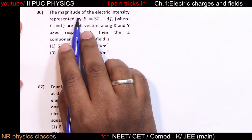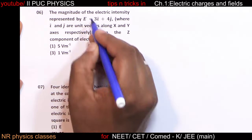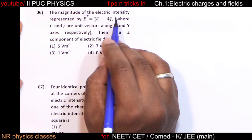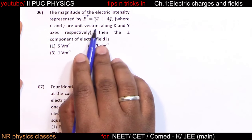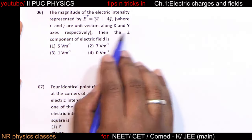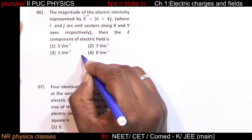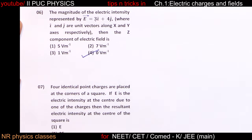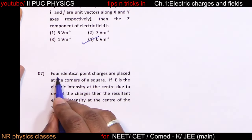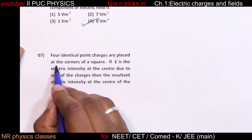For the electric intensity represented by E = 3i + 4j, where i and j are unit vectors along x and y axes, there is no z component. Therefore the z component of electric field is zero.